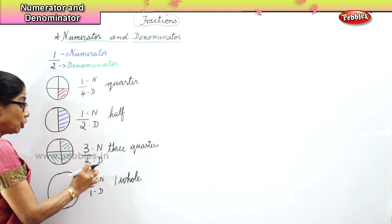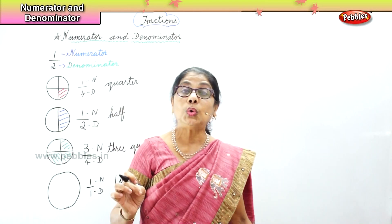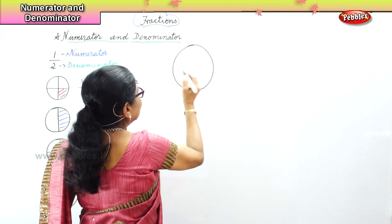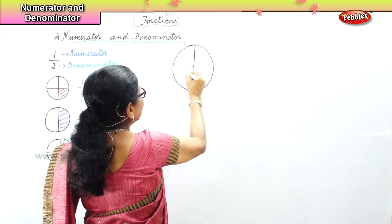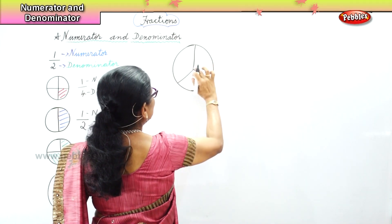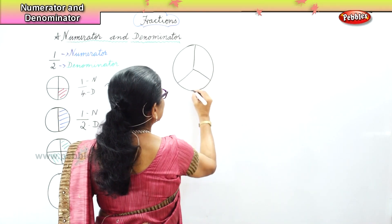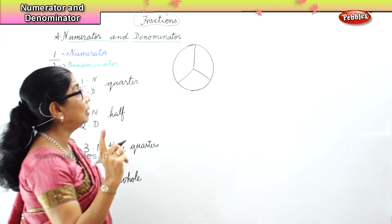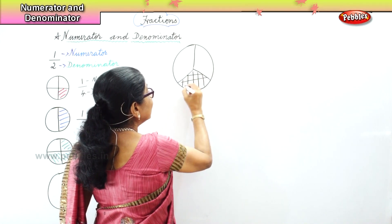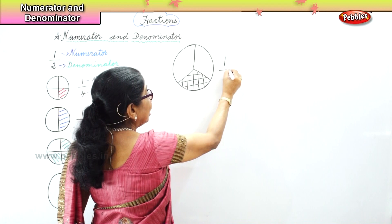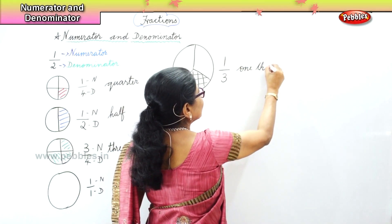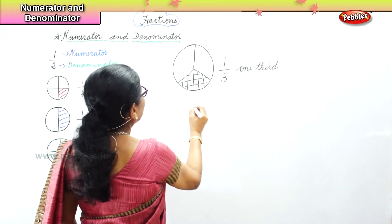Now let's look at what one third means. I am dividing this circle into three portions. We have divided the circle into three parts and we are going to color one portion only — one part out of three parts. So this is called one third.